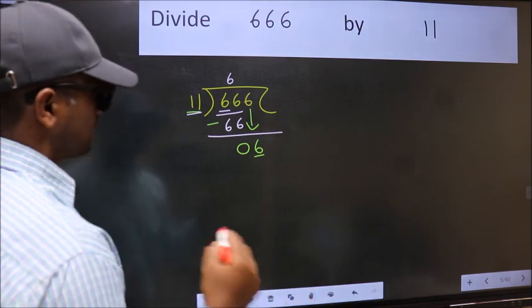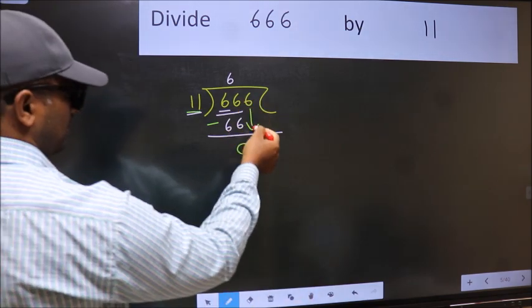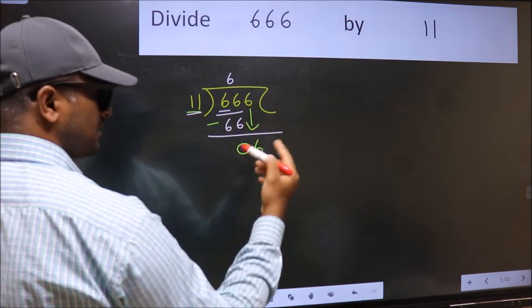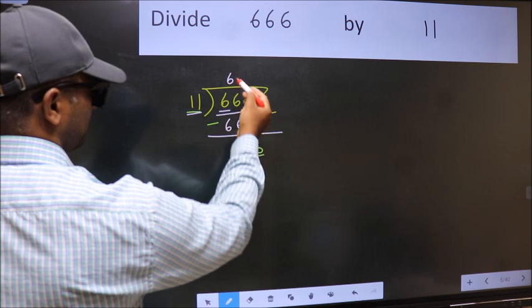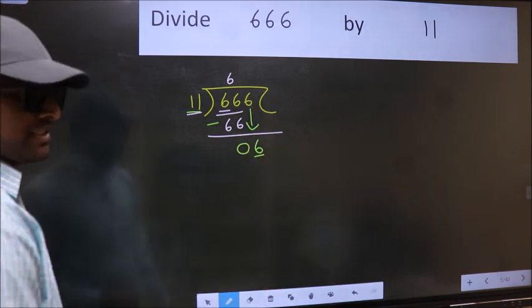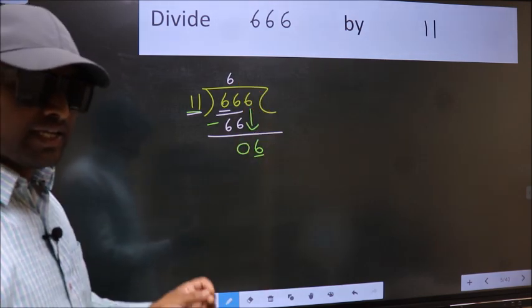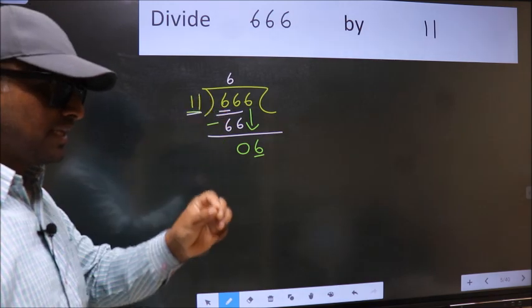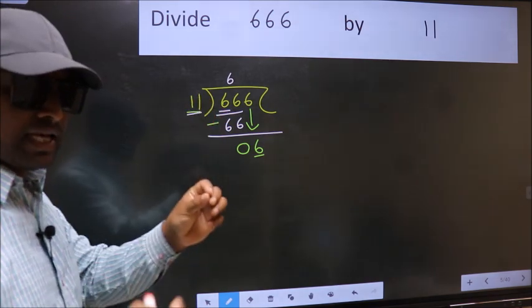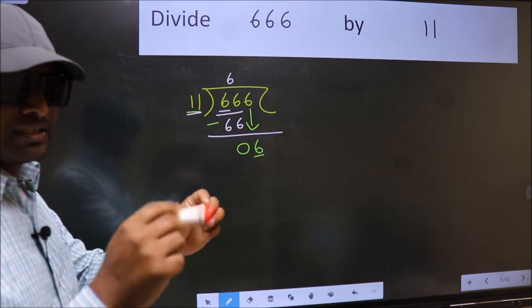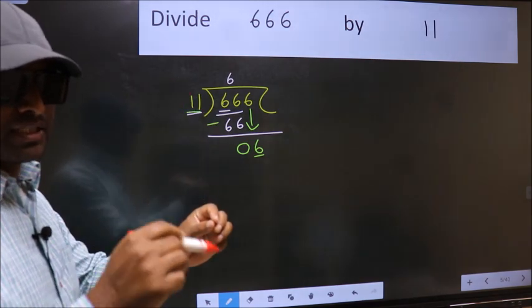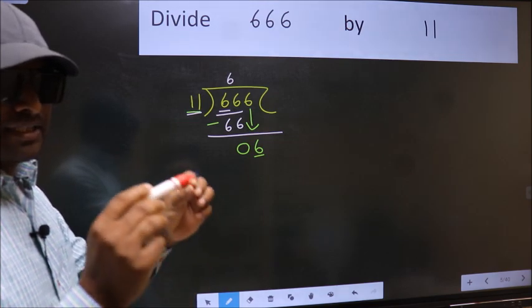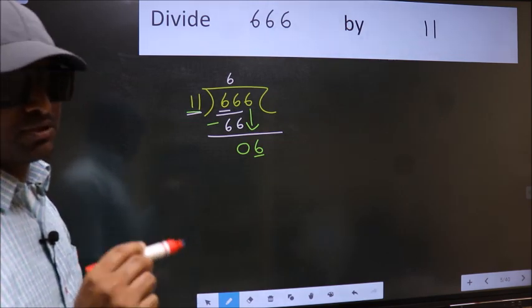Because just now you brought this number down, and in the same step you want to put dot, take 0, which is wrong. I repeat, bringing the number down and also put dot, take 0. Both at the same step, you should not do. Instead,